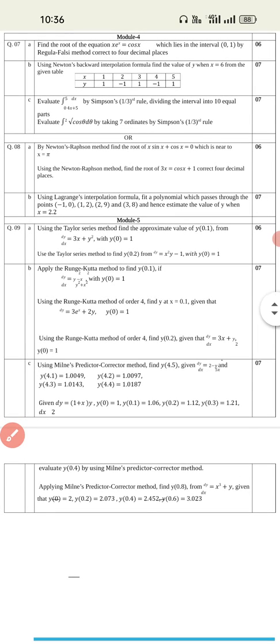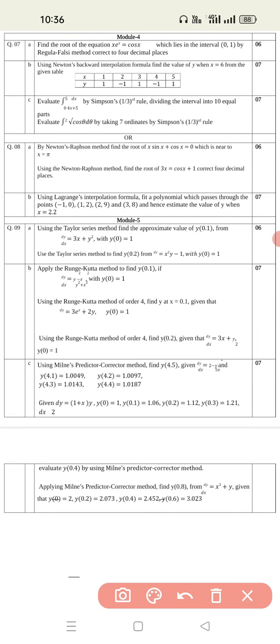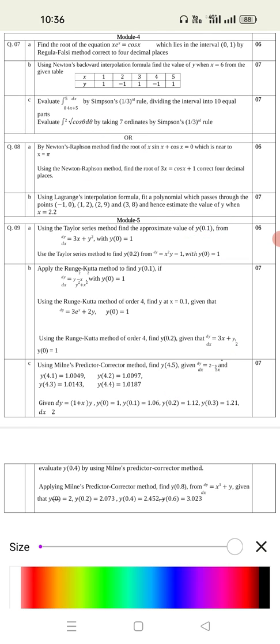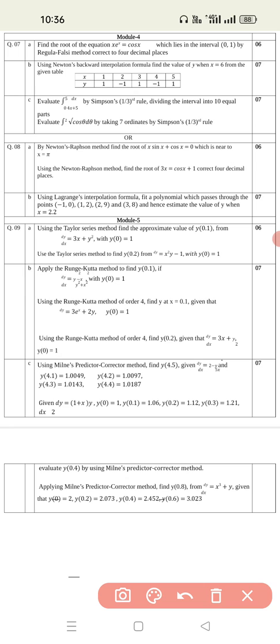Similarly, go to the seventh question, eighth question. Newton-Raphson method - based on this you will get one question. Lagrange's interpolation formula - you will get one question. Taylor series will get one question. Runge-Kutta method you will get one question. Milne predictor corrector method you will get one question. Like this we can easily guess here one question from one method.